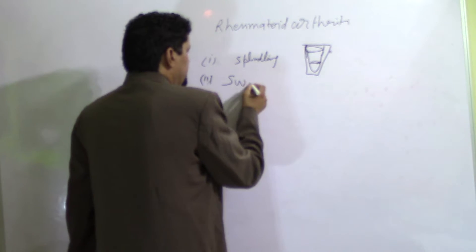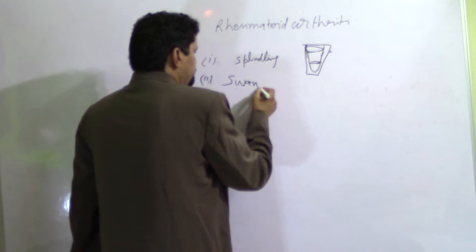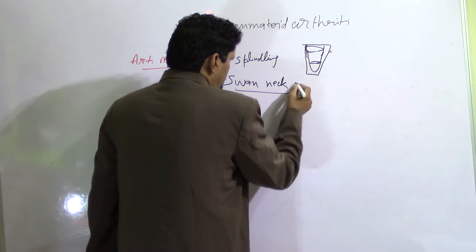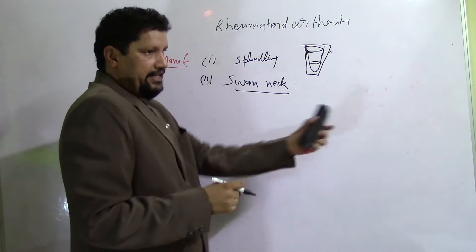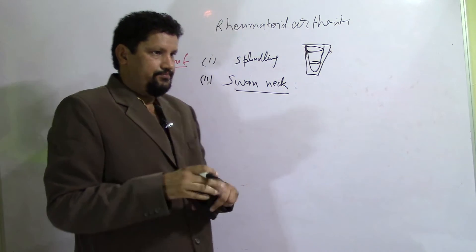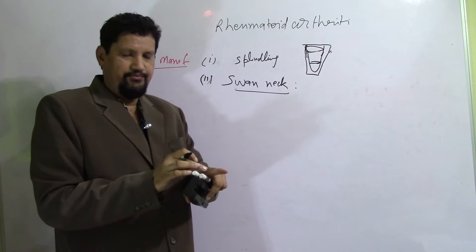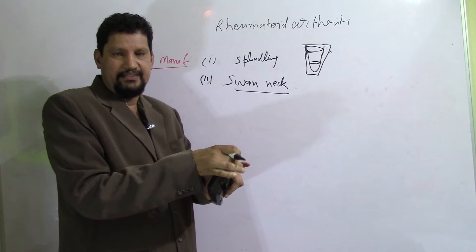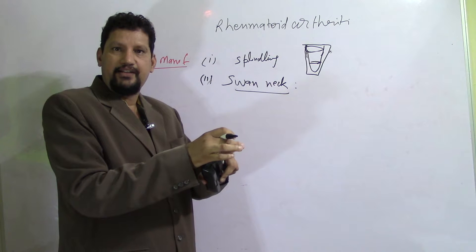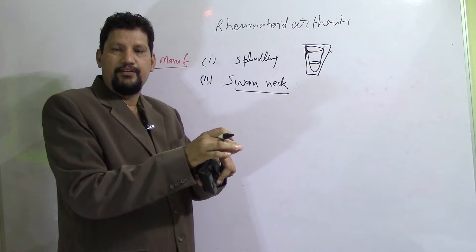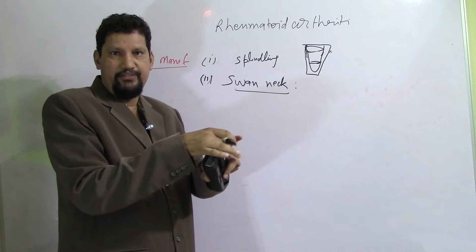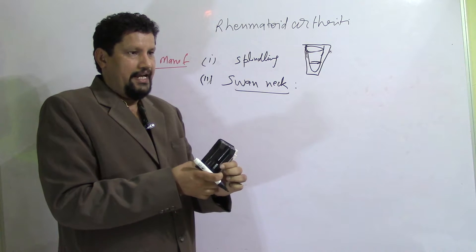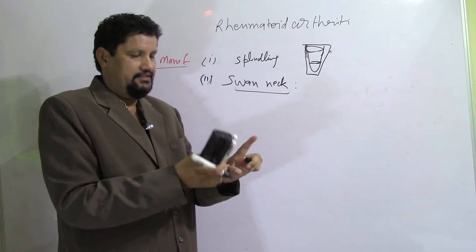The second deformity is swan neck deformity, in which the proximal interphalangeal joint is extended and the distal interphalangeal joint is flexed, giving the appearance of a swan's neck.